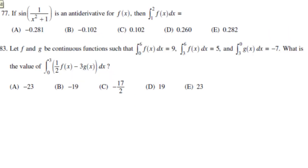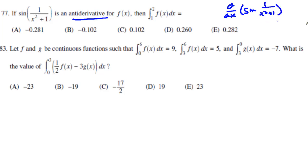Calculator problems — Number 77. It says sine of 1 over x squared plus 1 is an anti-derivative of f of x, which means I take the derivative of that in my calculator: d over dx of sine of 1 over x squared plus 1. I take that answer and plug it into the integral from 1 to 2, and what I end up getting is negative 0.281. Make sure you press control-enter to get the exact answer.